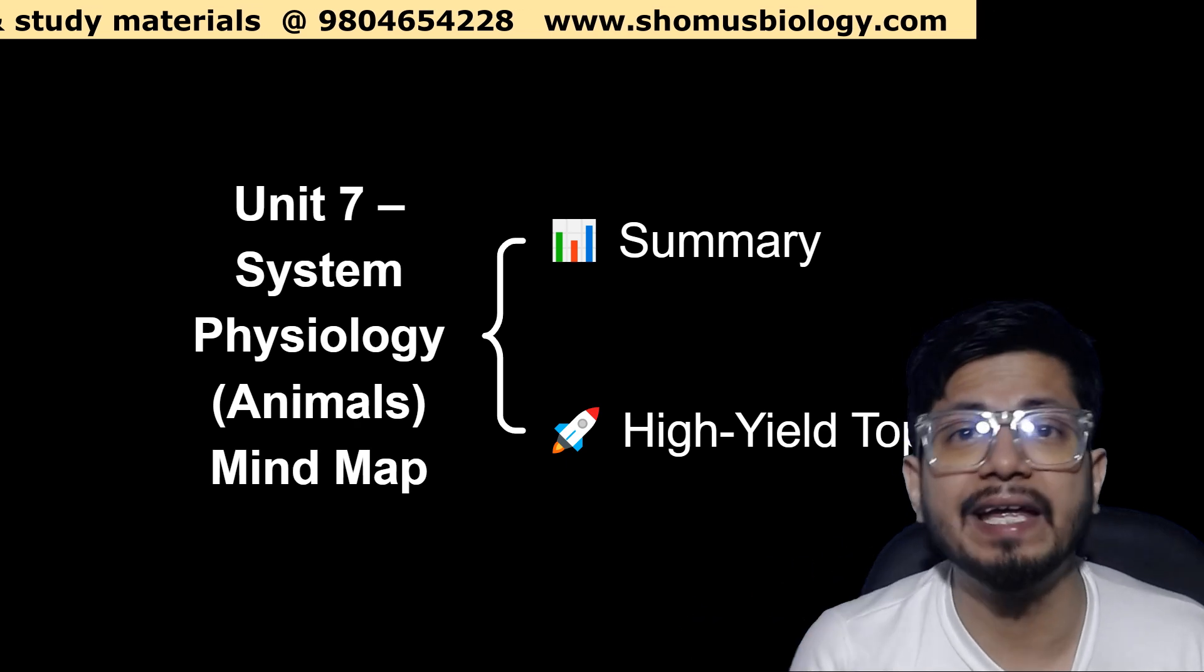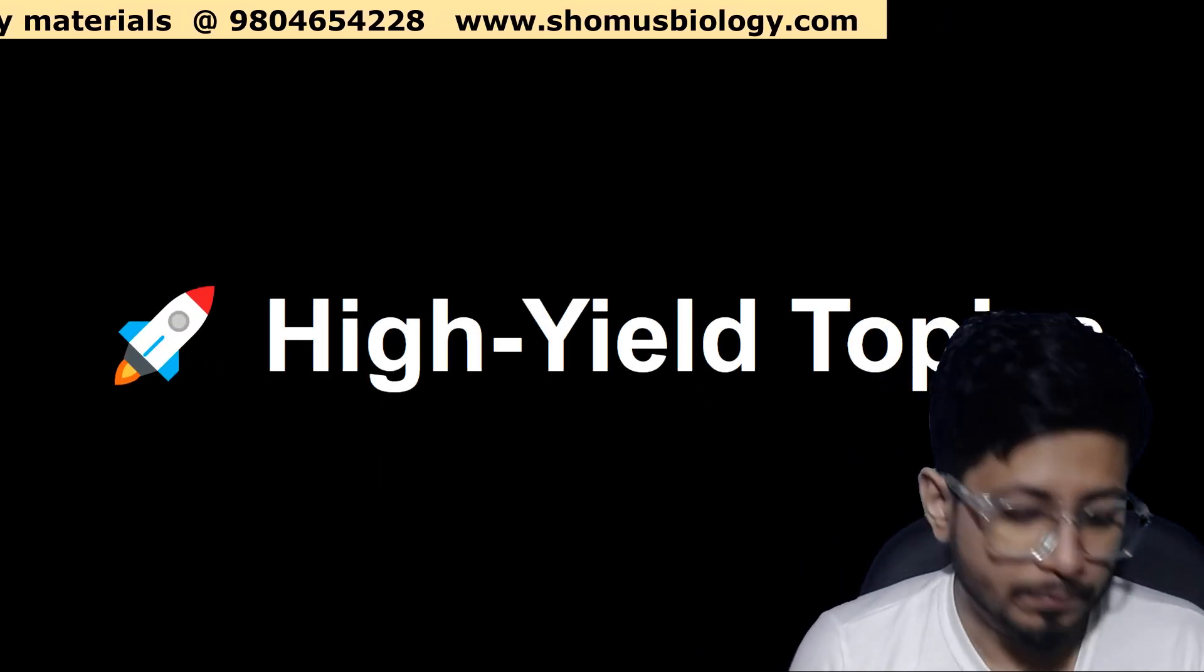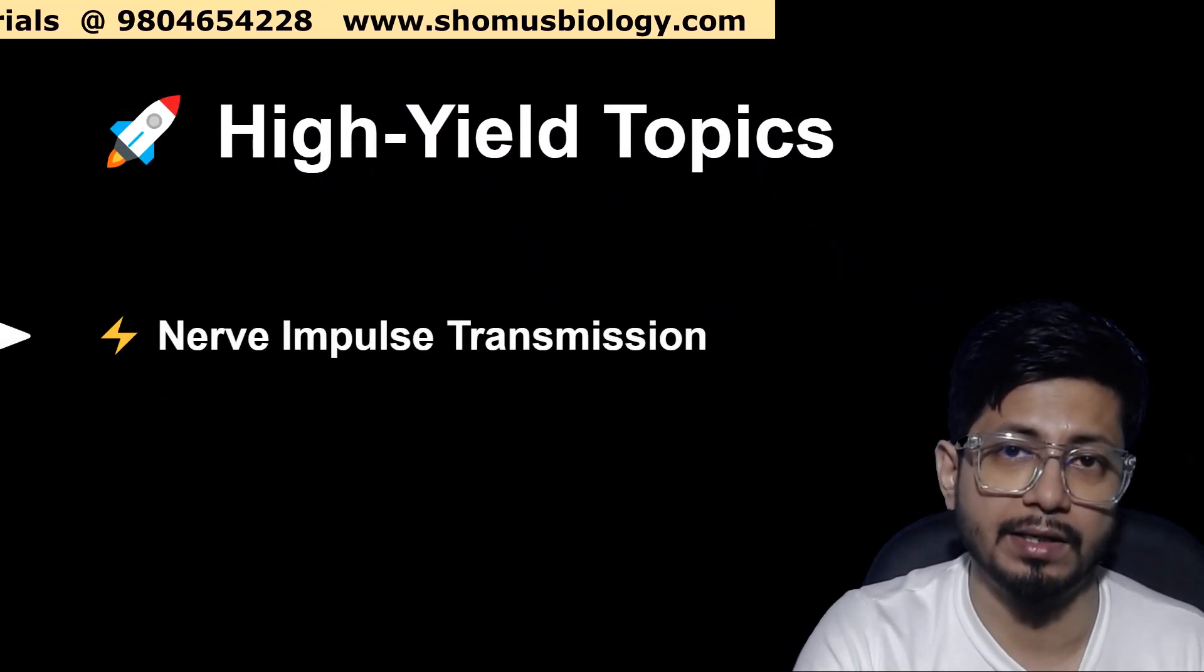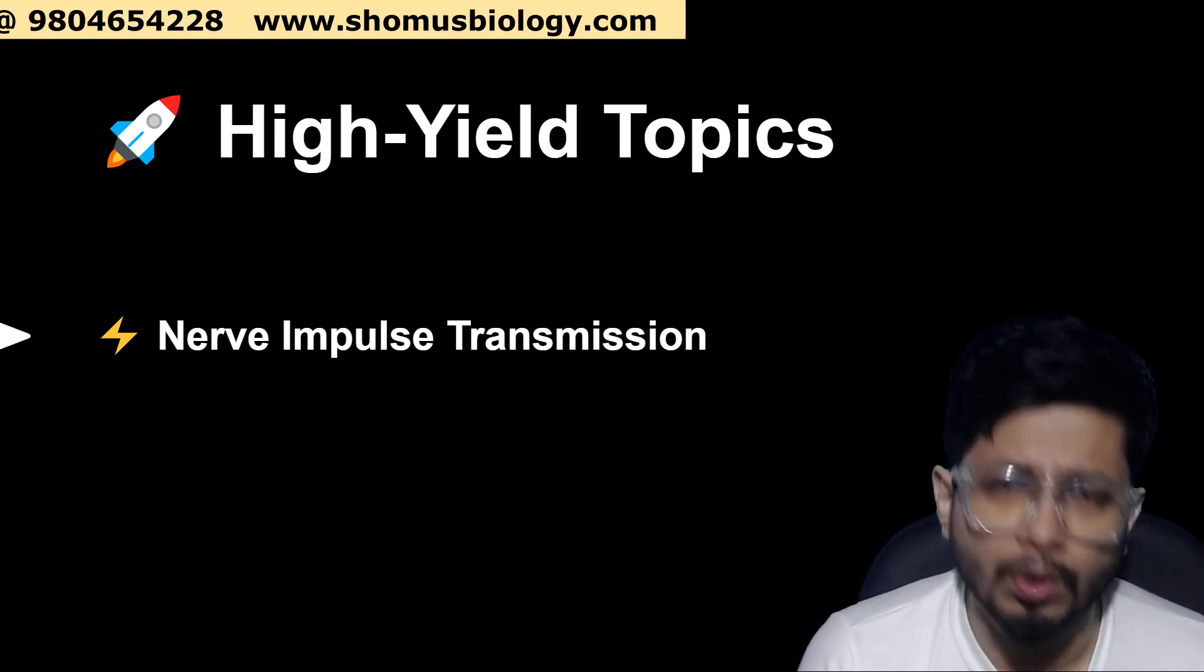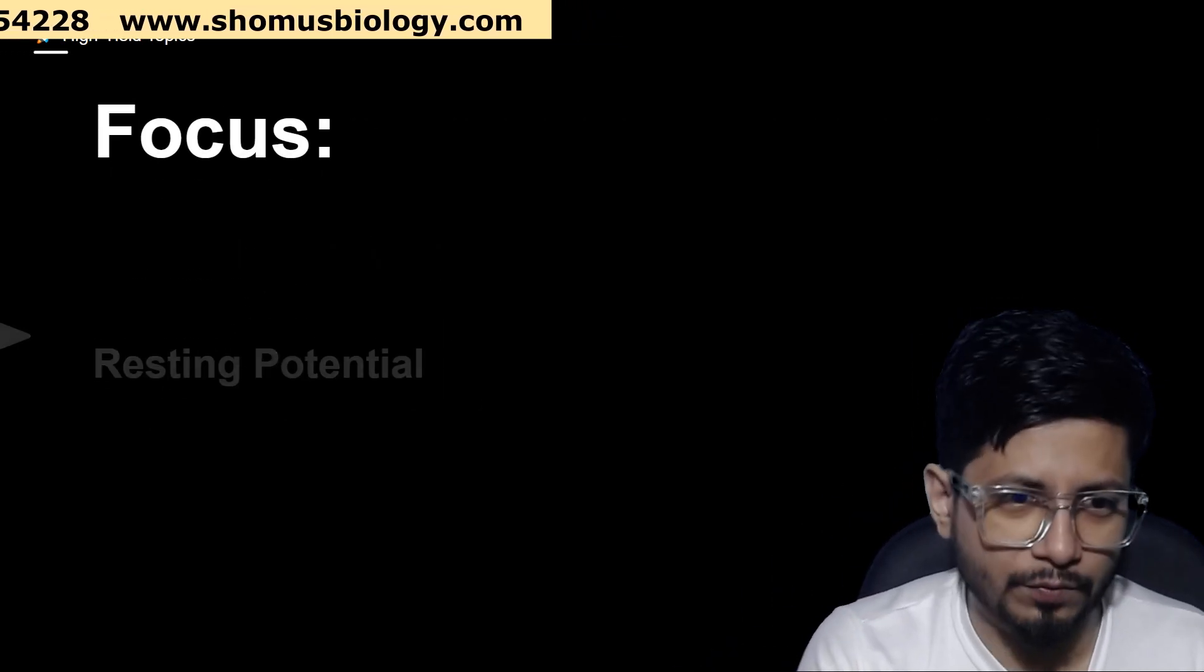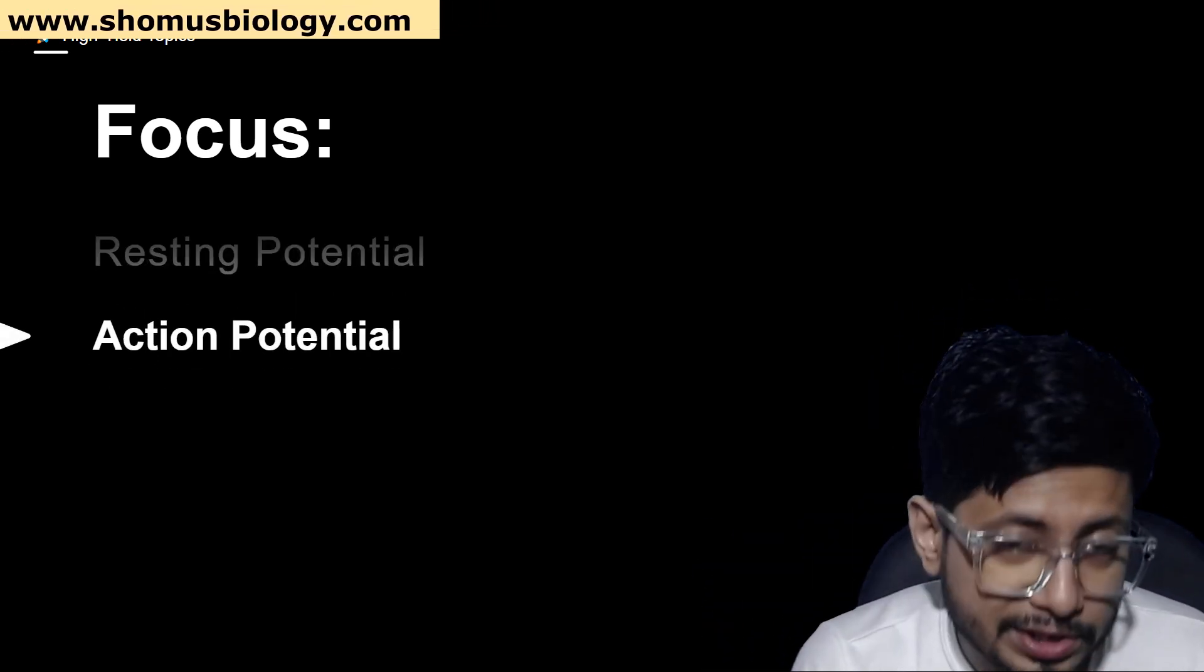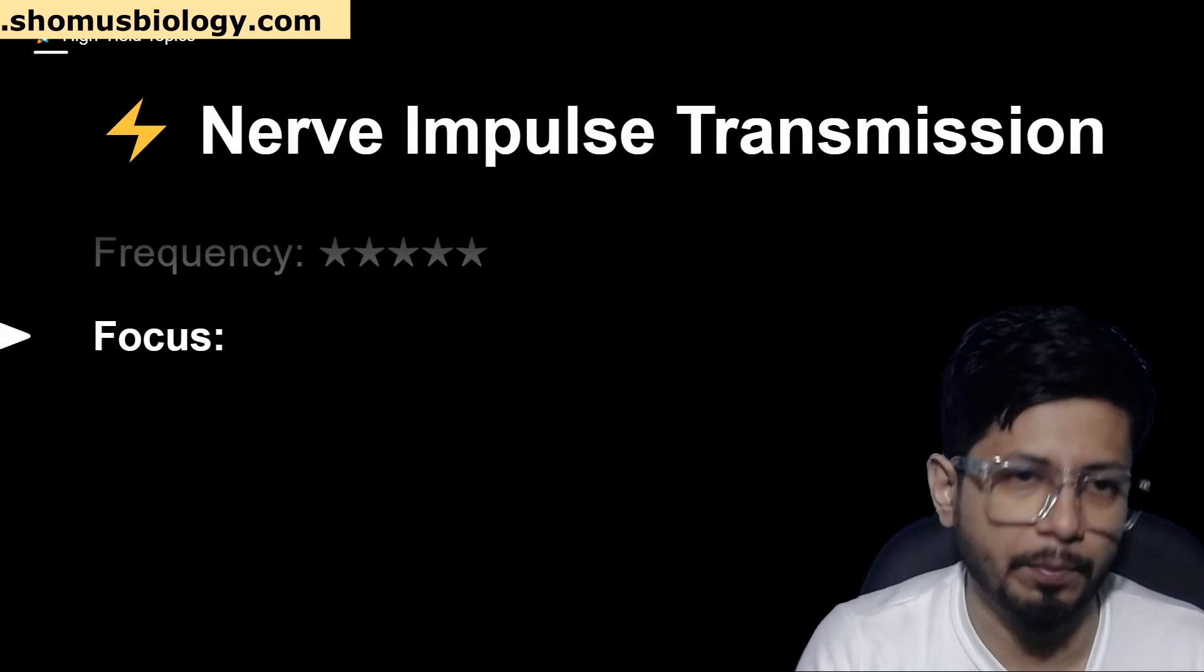Let's look at the high yield topics from human physiology chapter. High yield topics means the topics were repeatedly asked in CSIR NET examinations. Nerve impulse transmission is very, very important. The importance level star rating is 5 star out of 5. The focus here for this type of question is resting potential. You need to understand the action potential, how action potential originates and propagation of action potential. The synapse types are the important topics.